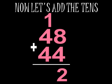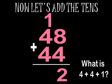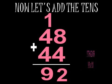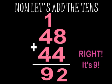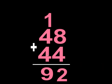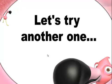Now I'm ready to add the tens column. Using the strategies we've learned, find the sum of 4 plus 4 plus 1, which gives me 9. So the sum of 48 plus 44 is 92. Okay, let's go on to our next problem.